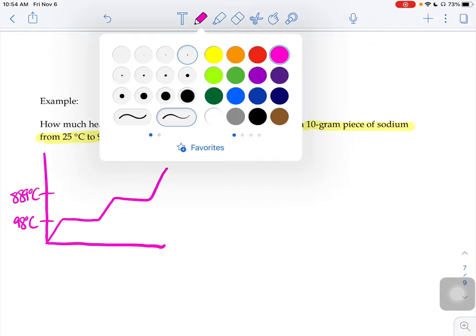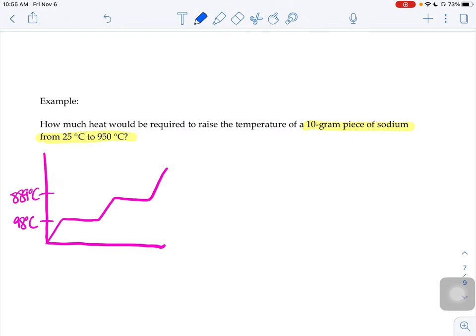So the next thing I'm going to do is put in the temperatures that are in my problem. If I'm going from 25 to 950, 25 is below 98, so it's down here somewhere. And 950 is above 889, so it's up here somewhere. So in my problem, I'm going to start here and end all the way up here.